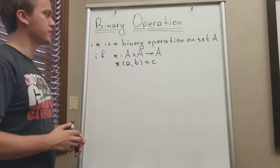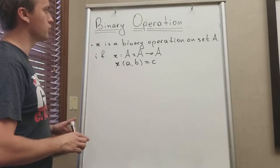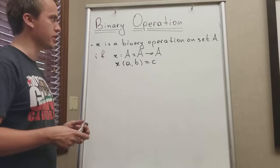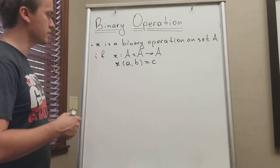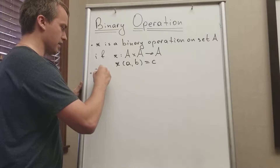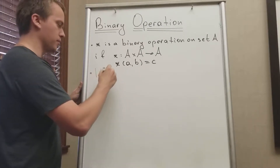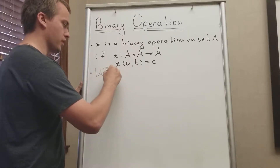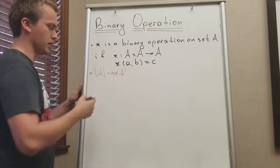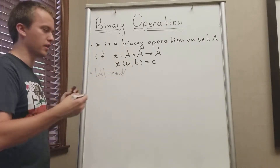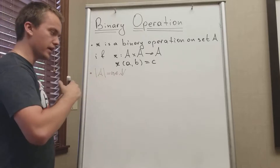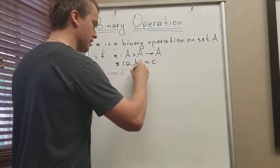In this video I want to talk about well-defined or good binary operations. Remember, if we have a finite set A — meaning the cardinality of A is some natural number — the set is finite, so we can count its elements.